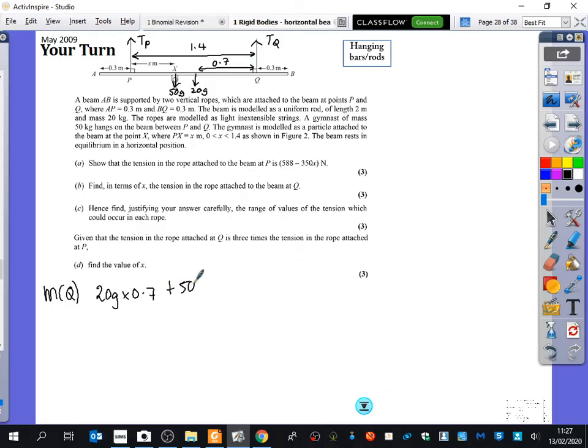So it's going to be 50g multiplied by 1.4 minus x. And that's going to be equal to the tension in P multiplied by? Good. TP times 1.4. Now, if we multiply all of this stuff out, it's going to give us this. So let's just actually get some numbers going on here.